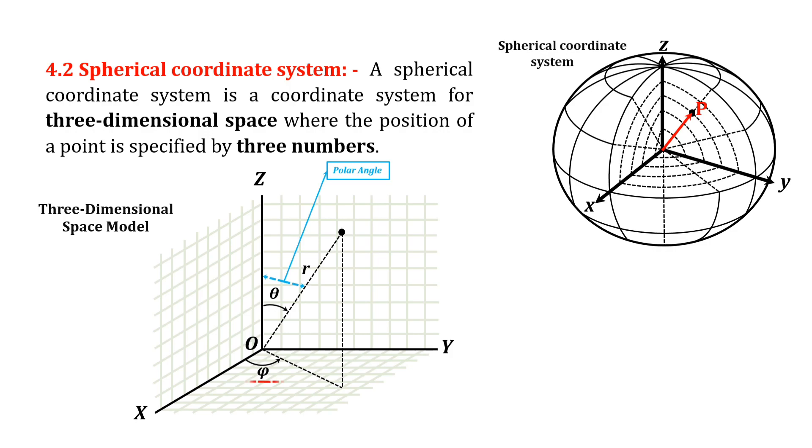The azimuthal angle phi is measured between the orthogonal projection of the radial line R onto the reference XY plane, which is orthogonal to the Z-axis and passes through the fixed point of origin, in either of the fixed X-axis or Y-axis.